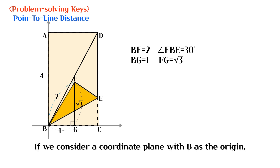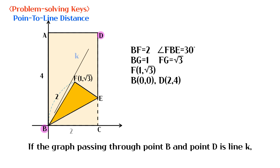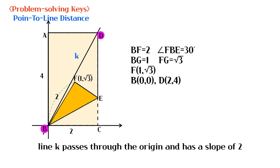If we consider a coordinate plane with B as the origin, the coordinates of F are (1, √3). If the line passing through point B and point D is line K, line K passes through the origin and has a slope of 2.